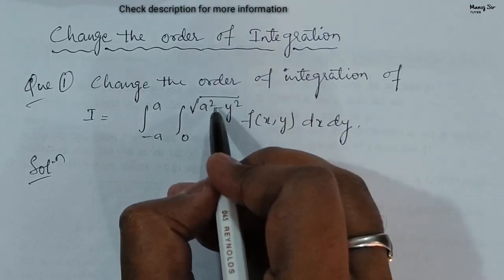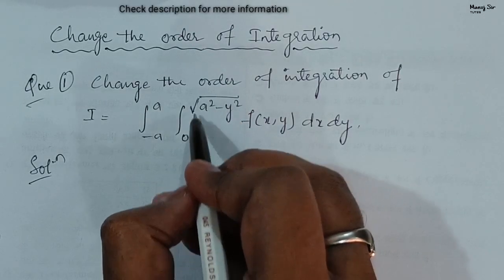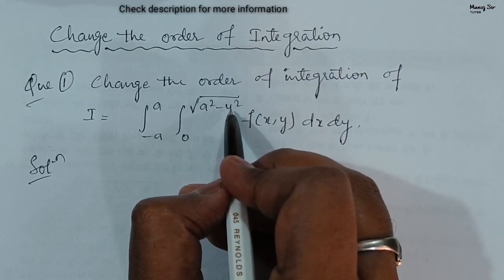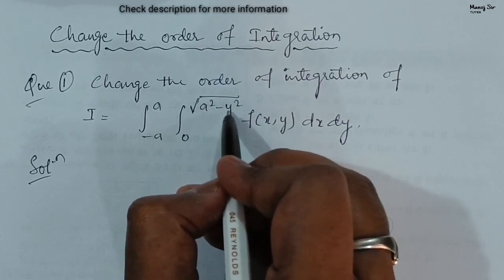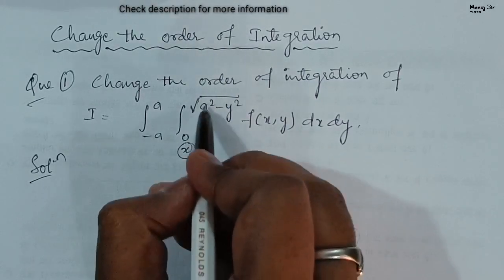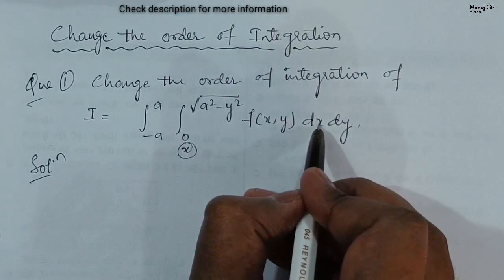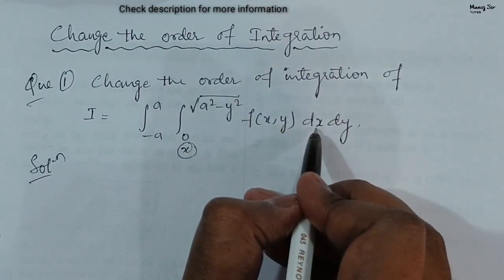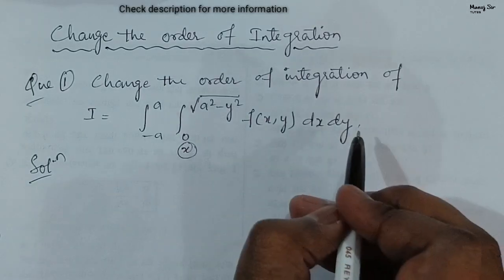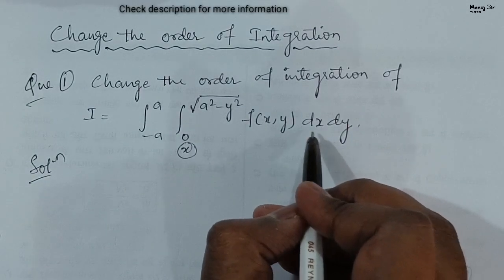Here we can see the limit goes from 0 to root of (a squared minus y squared). Since y is present here, this is the limit of x. Since this is the limit of x, we first integrate the function with respect to x. So we can say this order of integration is correct.